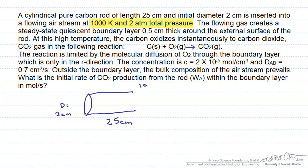This air stream is 1000 Kelvin and 2 atmosphere pressure. The gas creates a steady-state quiescent boundary layer 0.5 cm thick around the entire surface of the rod. Recall that this is cylindrical.